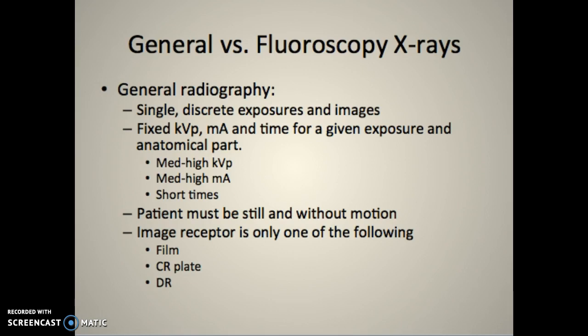In a general room it's single and discrete exposures of images. We take a radiograph and process the image - if it's digital it comes up on the monitor in basically real-time. It has fixed kVp and mA and we select the time, picking the shortest time possible. In general radiography we use medium to high kVp, medium to high mA, and the shortest exposure times possible to avoid patient motion blur.